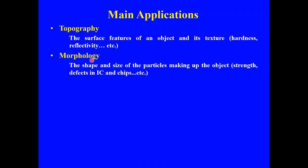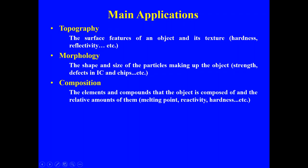We can also get information about the morphology of a sample, meaning the SEM gives us information about the shape and size of the particles making up the object. During morphological analysis, you can additionally obtain information about the strength of your sample, defects in ICs and chips, and so on.